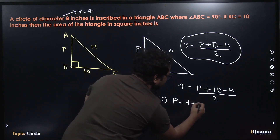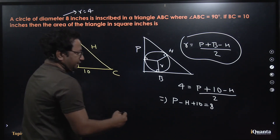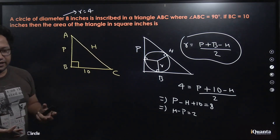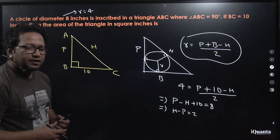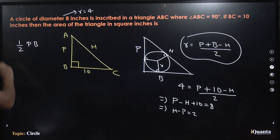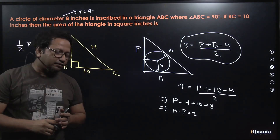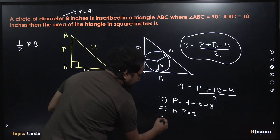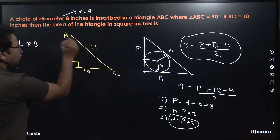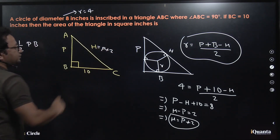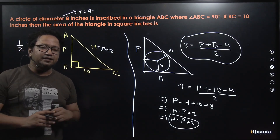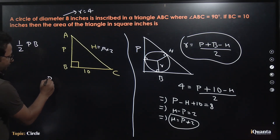Solving: P + 10 − H = 8, which gives H − P = 2, or H = P + 2. The area of the right-angled triangle is (1/2) × P × B. Since B = 10, we need to find P. We substitute H = P + 2 into the Pythagorean theorem: P² + B² = H², so P² + 100 = (P + 2)².